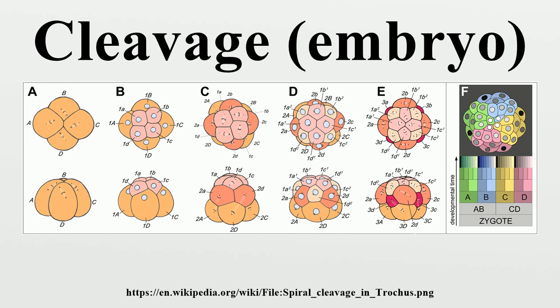In equal cleavage, the first two cell divisions produce four macromeres that are indistinguishable from one another, and each macromere has the potential of becoming the D macromere. After the formation of the third quartet, one of the macromeres initiates maximum contact with the overlying micromeres at the animal pole of the embryo. This contact is required to distinguish one macromere as the official D quadrant blastomere. In equally cleaving spiral embryos, the D quadrant is not specified until after the formation of the third quartet, when contact with the micromeres dictates one cell to become the future D blastomere.